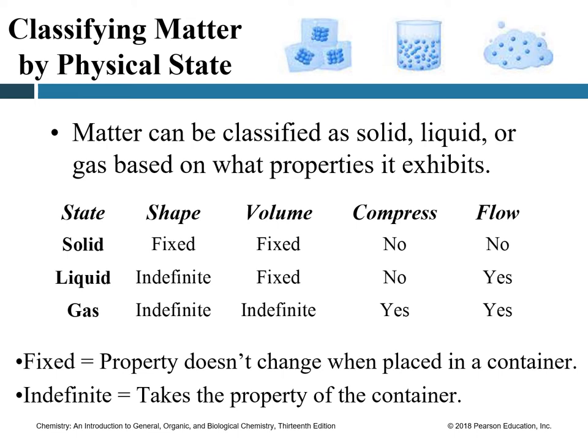In a liquid, there is some space between atoms and the atoms are moving around. Liquids have an indefinite shape — they take up the shape of whatever container you place them in. For instance, water in a cup takes the shape of the cup; in a bottle it takes the shape of the bottle. However, the volume of a liquid is fixed — a cup of water remains a cup of water unless you add or remove some. Liquids cannot be compressed but they do flow.